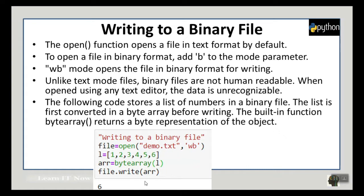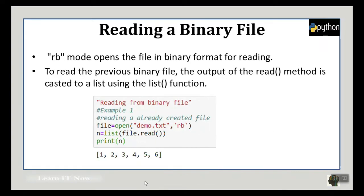Now let's see how to read this file. For reading in binary mode, we need to use 'rb' mode for the mode parameter. We write: file = open(name_of_file, 'rb').